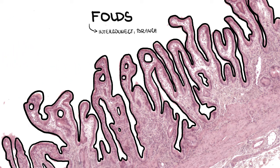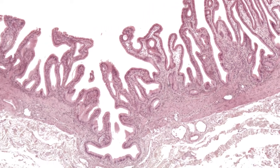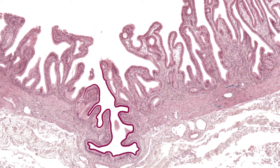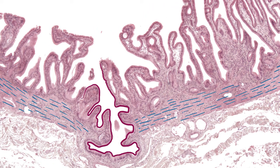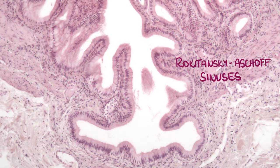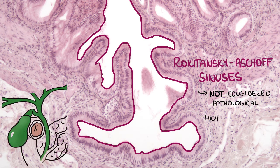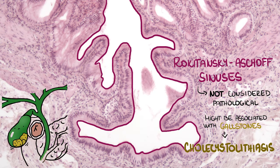Folds sometimes look like little monsters. The mucosa also forms deep outpouchings which penetrate into the muscular layer or even through it. They are called Rokitansky-Aschoff sinuses. Their presence is not considered pathological, but they might be associated with gallstones — cholecystolithiasis.